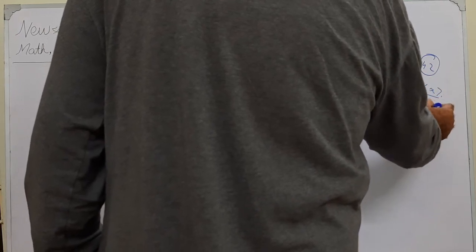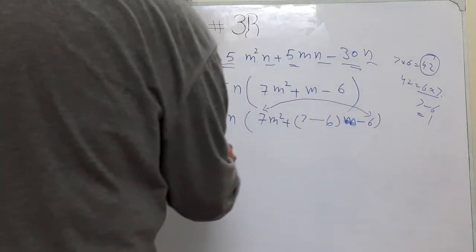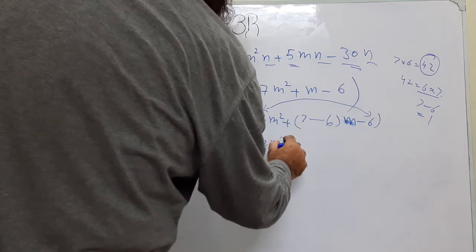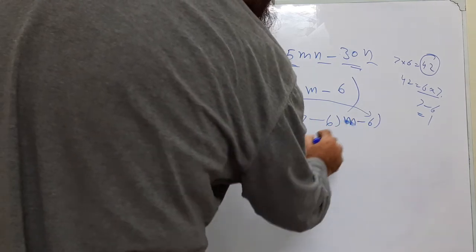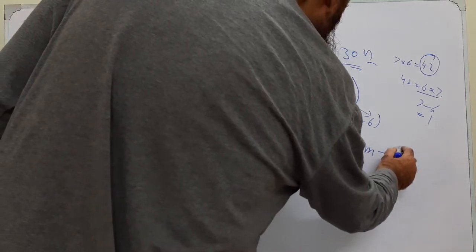So if we do 7 minus 6 it becomes 1. So we can put here 7 minus 6. Now we need to open the brackets. 7M square plus 7 into M, 7M, plus minus 6 into M minus 6.